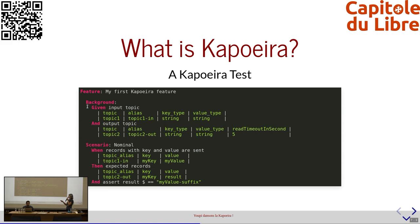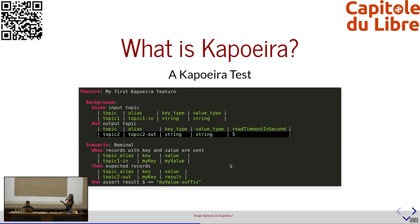On retrouve une première partie « feature » avec le titre de la feature. Dans un background, on va définir le topic d'entrée — input topic. On peut en avoir plusieurs, donc on les met sous forme de tableau, avec le nom du topic, un alias, les types de la clé et de la valeur — ici du string, mais ça pourrait être du JSON ou de l'Avro. On va aussi avoir les topics de sortie avec le nom, l'alias, les formats de clé et de valeur, et un paramètre de timeout — par exemple 5 secondes — donné au Kafka Stream pour effectuer son traitement.